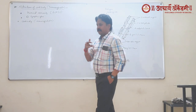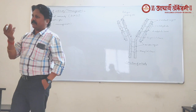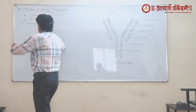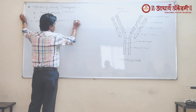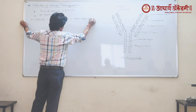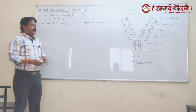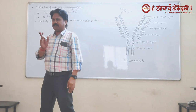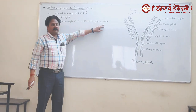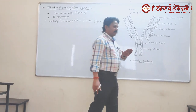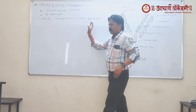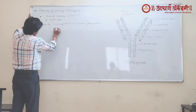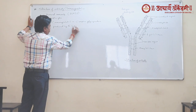The immune system protects the body from different infectious agents. Immunoglobulin means it is a type of protein present in blood — a blood protein. Whatever antibodies are present, they are also called immunoglobulins. These antibodies are complex glycoproteins. So, antibody or immunoglobulin is a complex type of glycoprotein produced by the body.